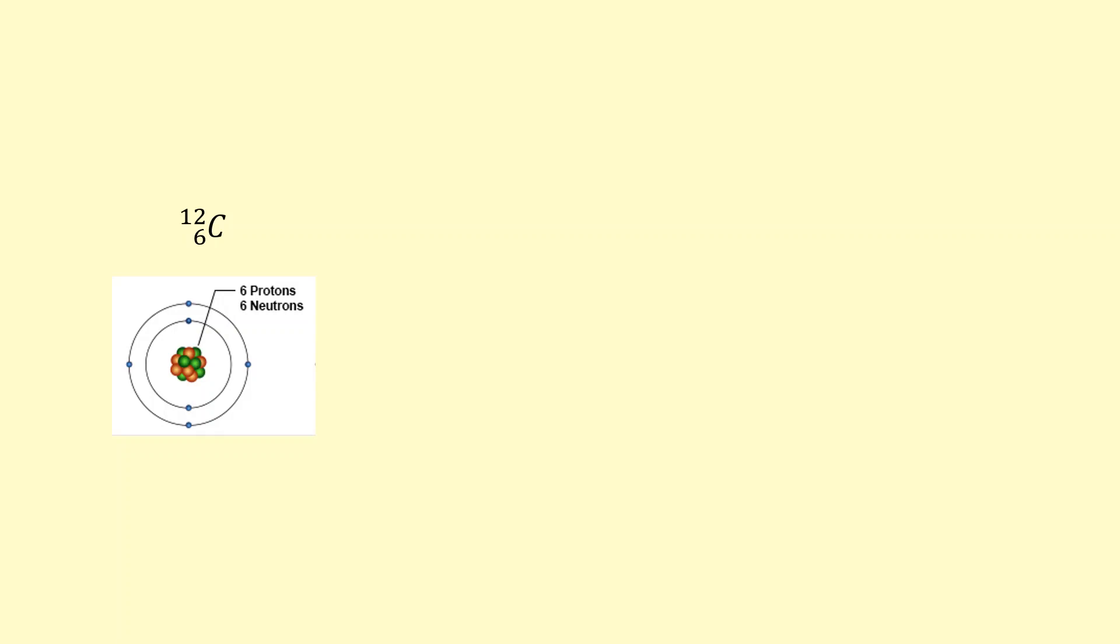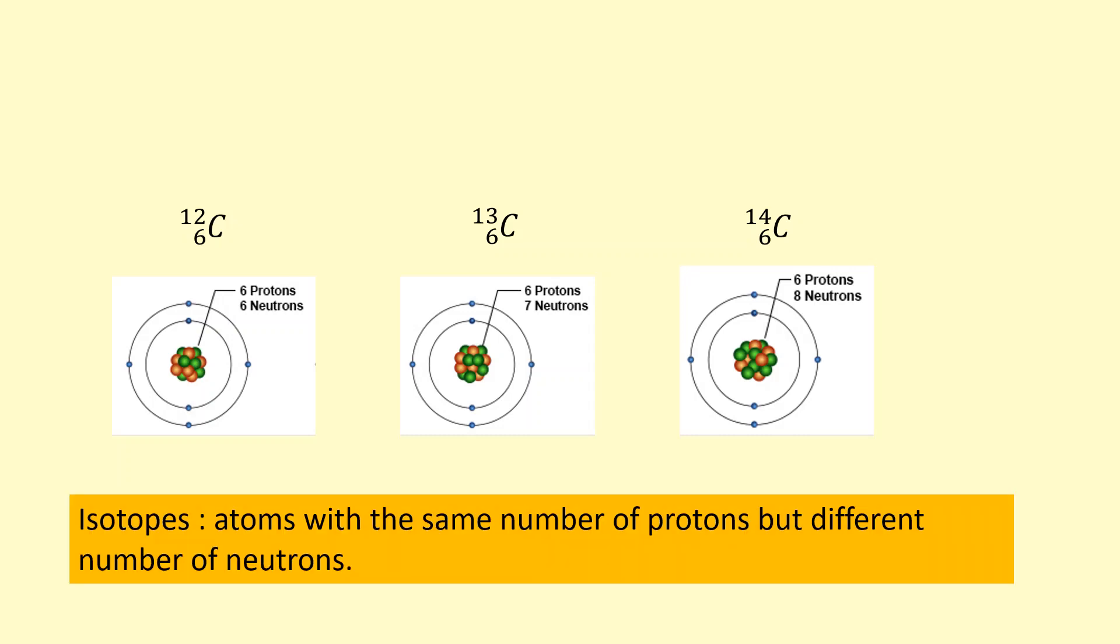Here we have carbon-12 nuclei, carbon-13 nuclei which has an extra neutron, and carbon-14 which has two extra neutrons compared to carbon-12. These are what we call isotopes. They have the same number of protons—that's why they're carbon—but they have different numbers of neutrons.